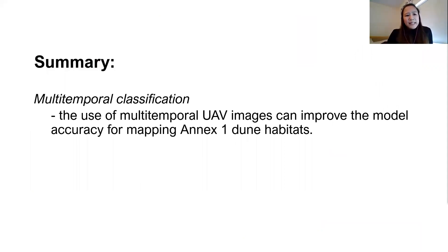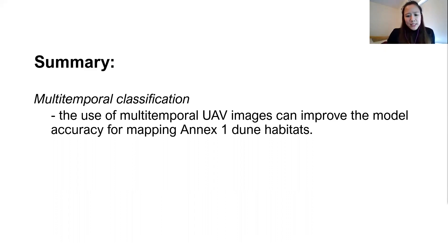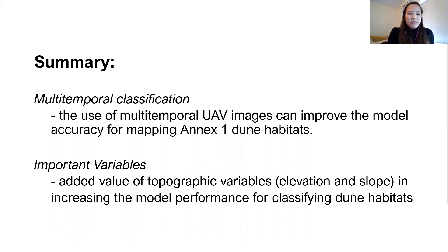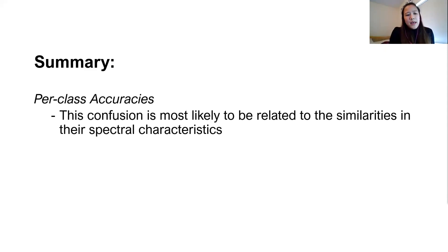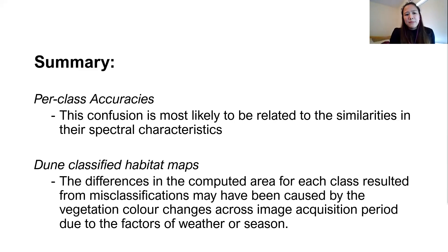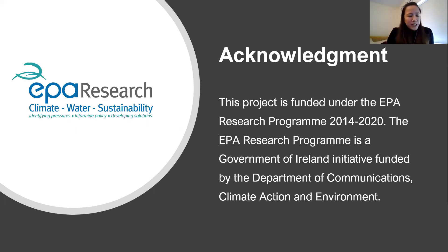In summary: the use of multi-temporal UAV images can improve model accuracy for mapping Annex 1 habitats, and further tests will be conducted to evaluate this. Topographic variables — elevation and slope — add value in increasing model performance for classifying dune habitats. Poor class accuracy for some classes is most likely related to similarities in spectral characteristics. Differences in computed area for each class resulted from misclassifications. Acknowledgement goes to the EPA. Thank you for listening.